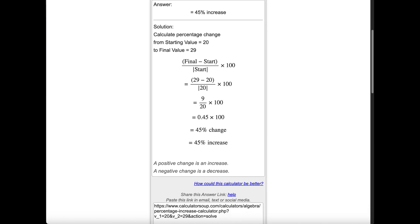Since 20 is the starting value and 29 is the final value, the formula is rewritten as 29 minus 20 divided by the absolute value of 20 times 100. For the first step, we subtract 29 minus 20, which is 9, over the absolute value of 20, which is 20 times 100.